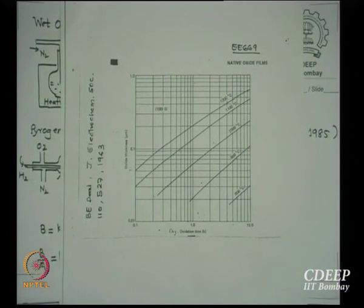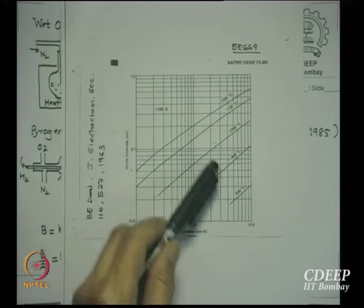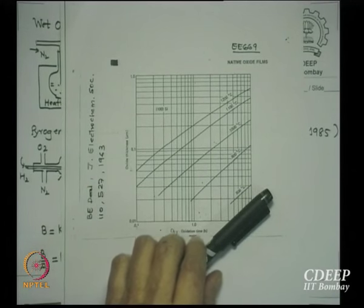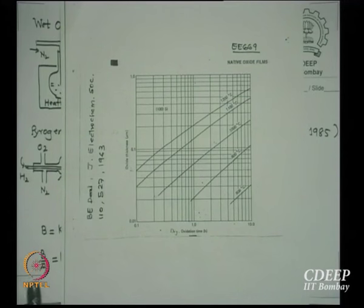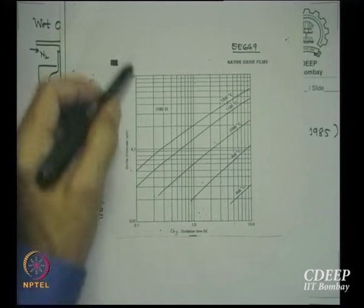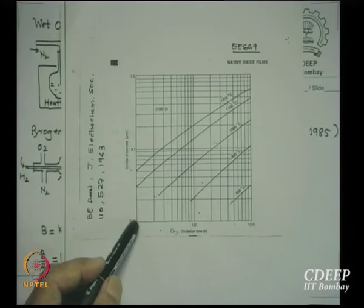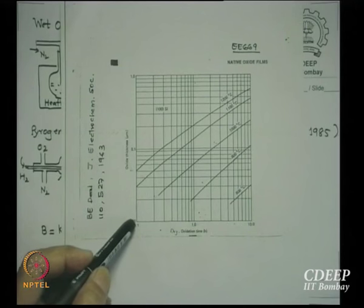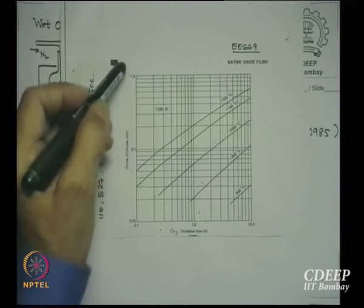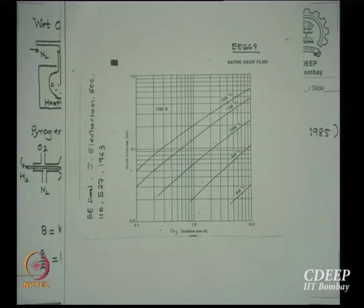The dry oxidation graph shows oxide thickness vs. time at 800, 900, and 1000°C — you can extrapolate on the log-log scale. The x-axis is time in hours (0.1, 1, 10), and the y-axis is oxide thickness in microns (0.01 micron = 100 Angstroms; 0.1 micron = 1000 Angstroms; 1 micron = 10,000 Angstroms). Note: the current trend is nanometres, but 1 nm = 10 Angstroms.